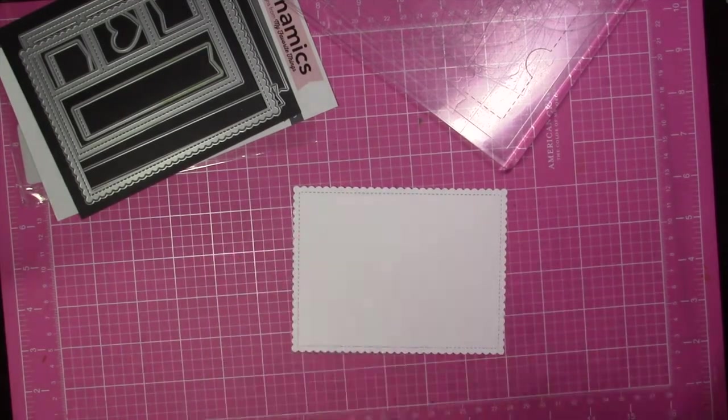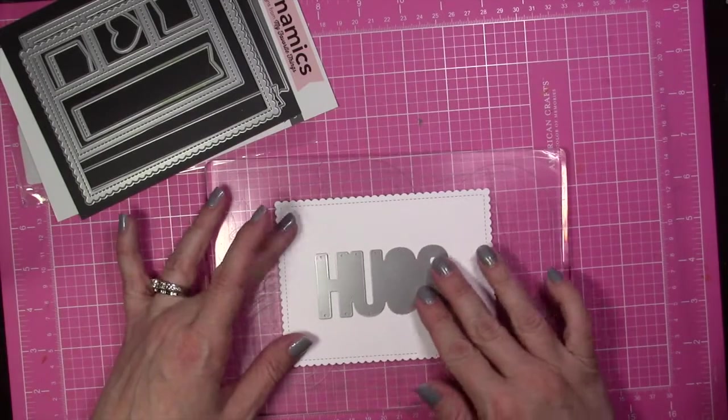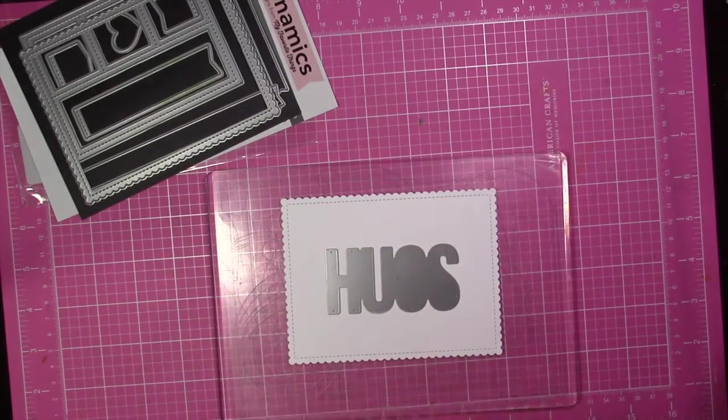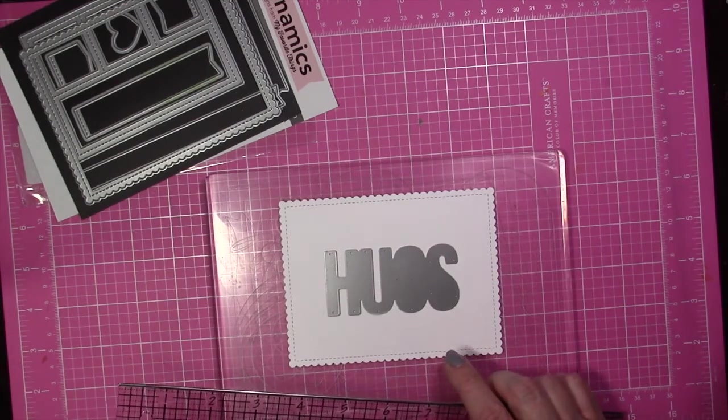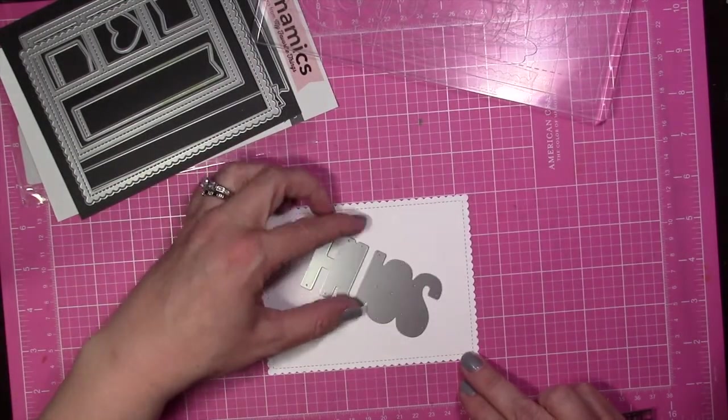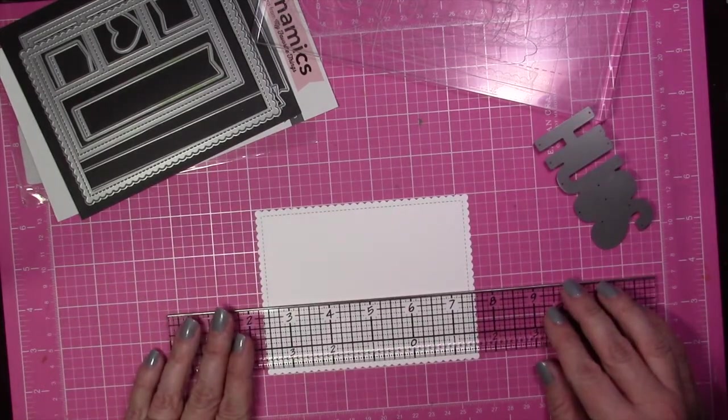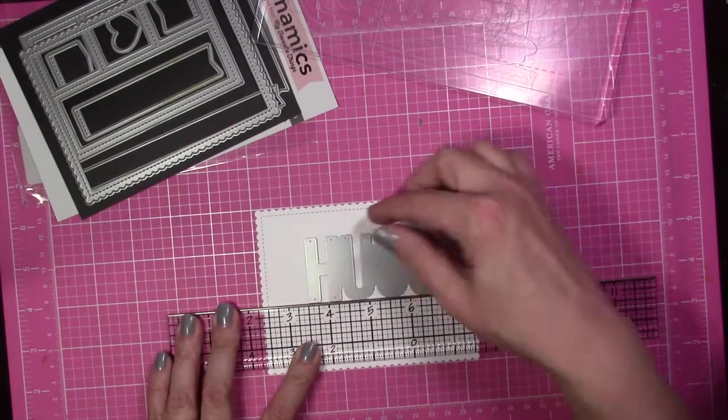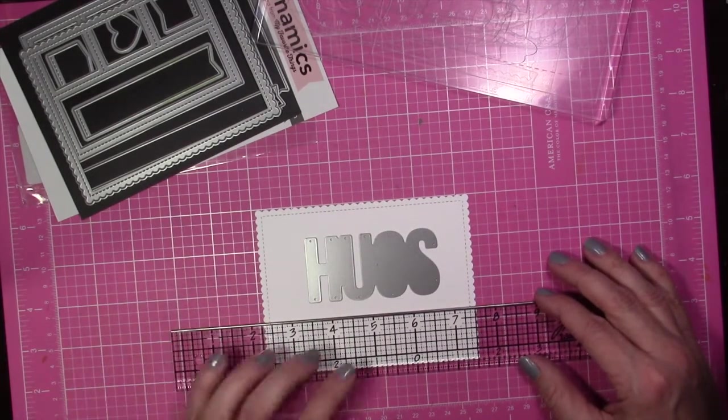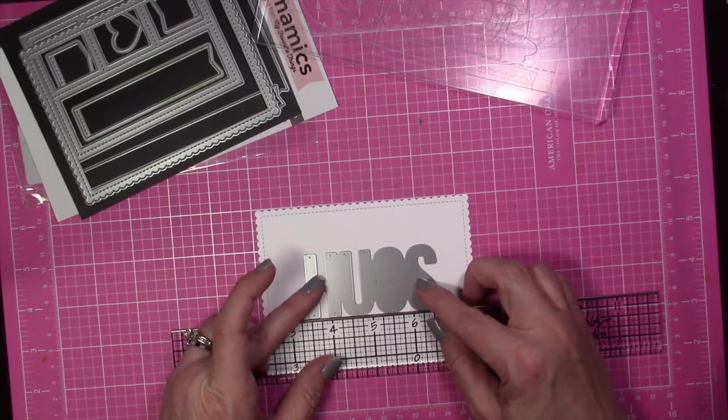I'm going to line that up into the center of the white panel and use a ruler to make sure that's straight. Once I have it in position, I'm going to tape it down with some washi tape. When you're using the washi tape, you want to be careful and make sure you de-stickify it as much as you can because it stuck to my paper a little bit. With a large opening piece like this, you want to make sure it's not going to pull anything up.